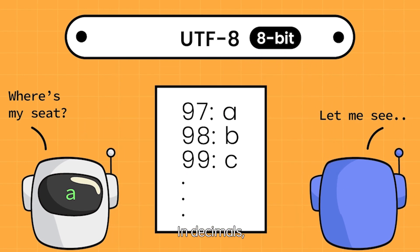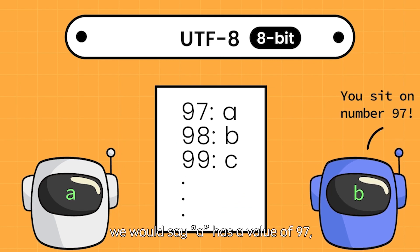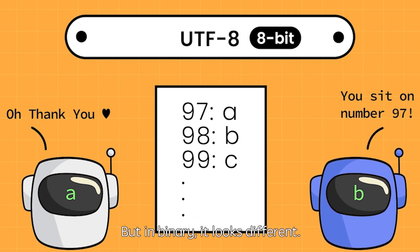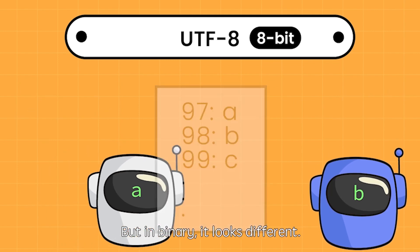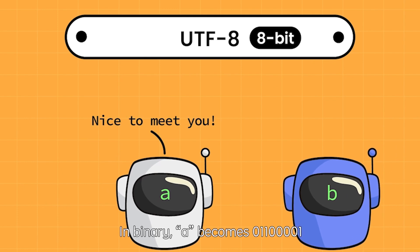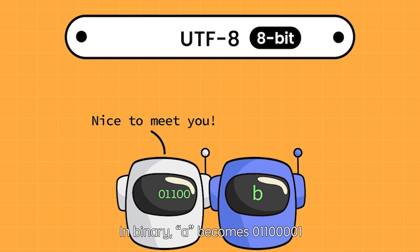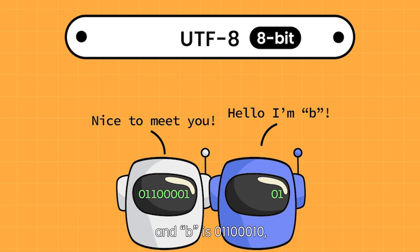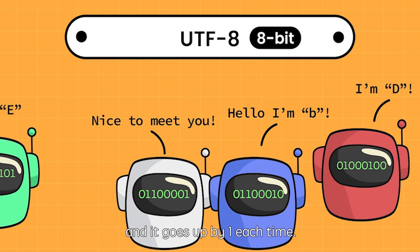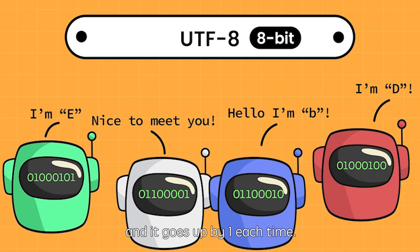In decimals, we would say A has a value of 97, but in binary it looks different. In binary, A becomes 01100001, and B is 01100010. And it goes up by 1 each time.